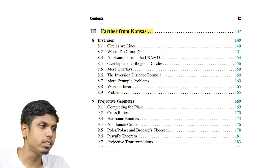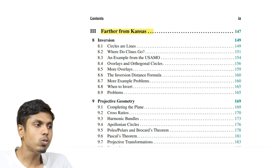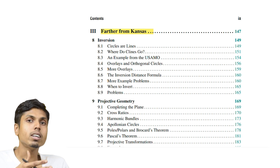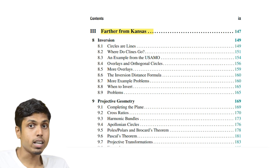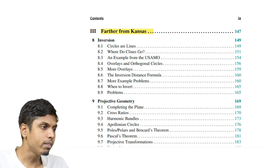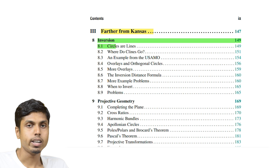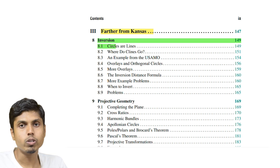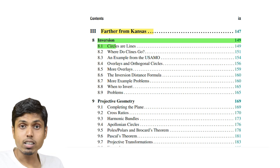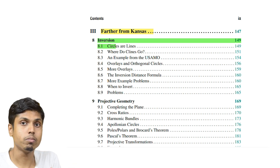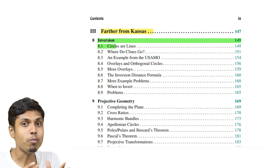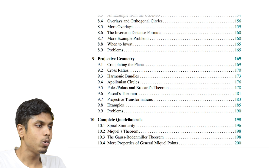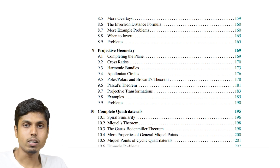The third section is named 'Farther from Consensus,' covering beautiful transformations of the plane that help solve problems which might seem very difficult using usual Euclidean geometry techniques. For example, inversion is performed about a circle and transforms lines to circles and circles to lines, which can simplify a complicated diagram. However, note that it can sometimes make a simple diagram look more complicated, so you have to be selective. Practicing problems will make you a master of these concepts.